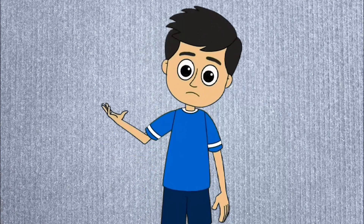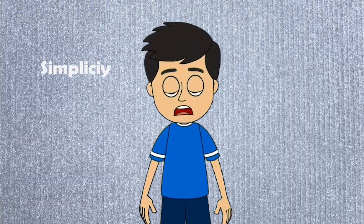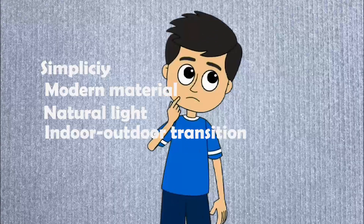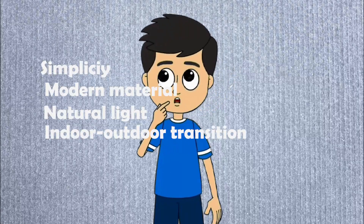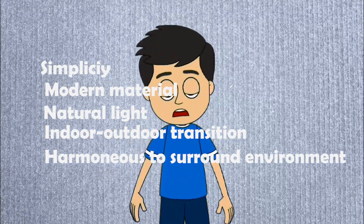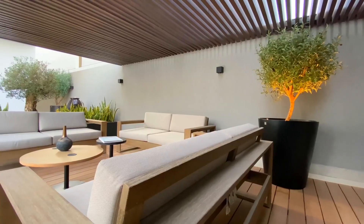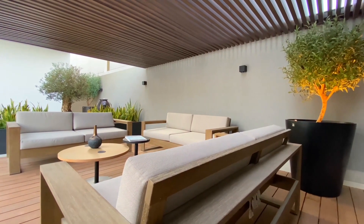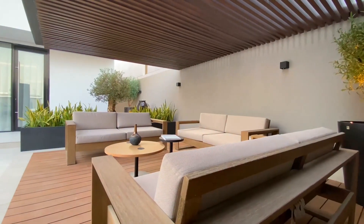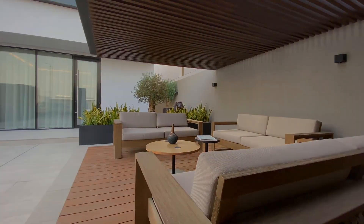In summary, creating a modern house exterior requires a focus on simplicity, modern materials, natural light, seamless indoor-outdoor transitions, and a harmonious relationship with the surrounding environment. By following these tips and incorporating modern design elements into your exterior, you can create a beautiful and functional space that is sure to impress. Thanks for watching.